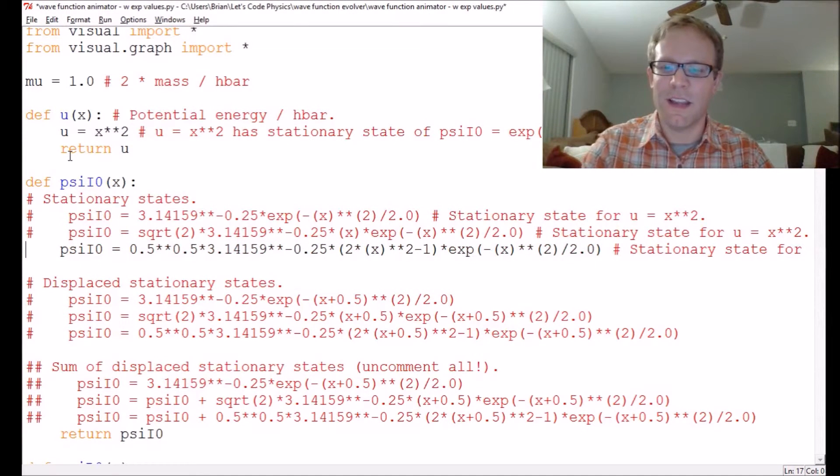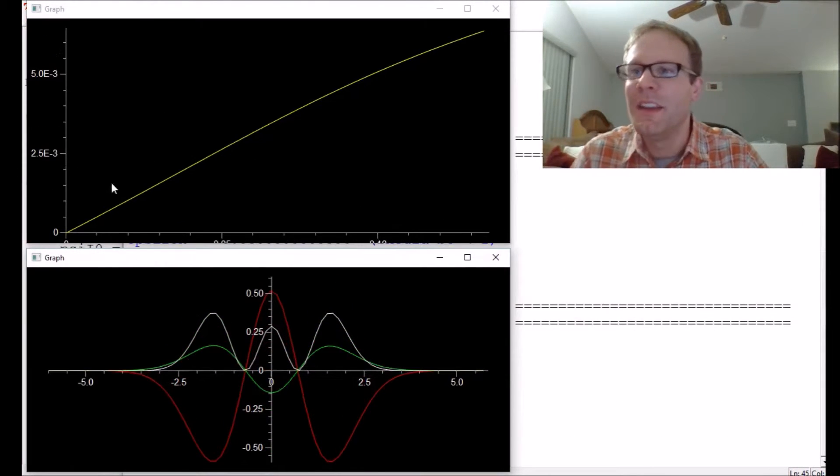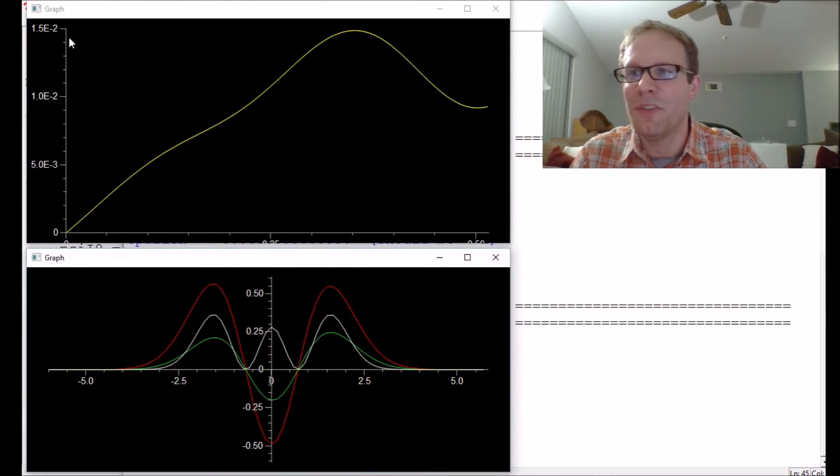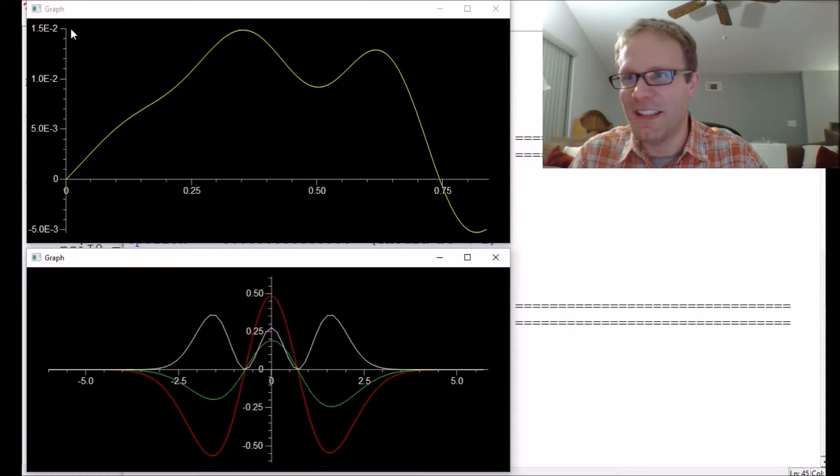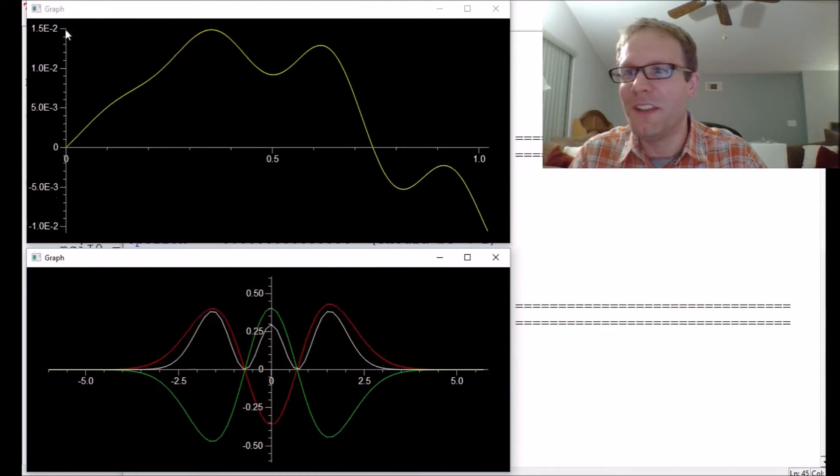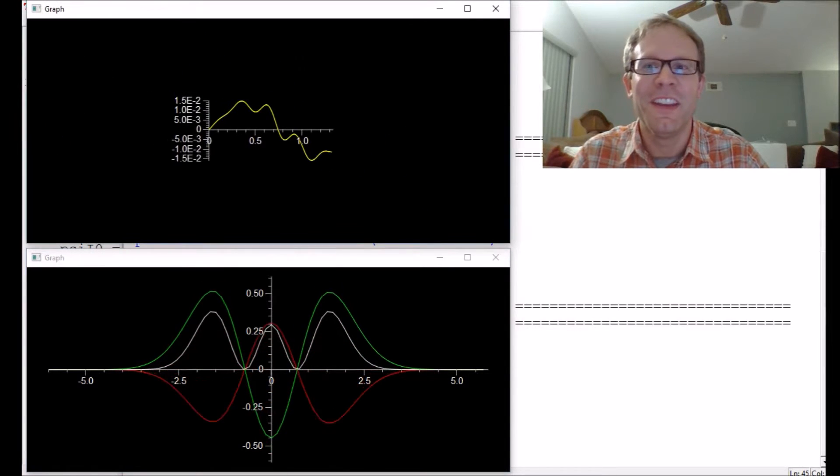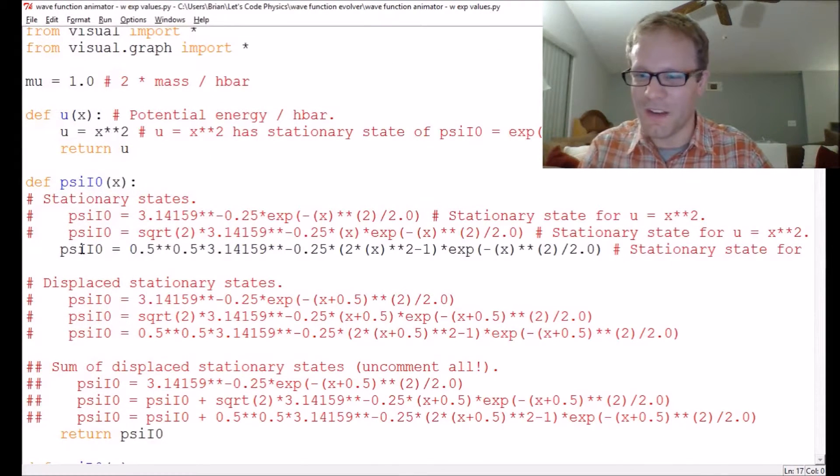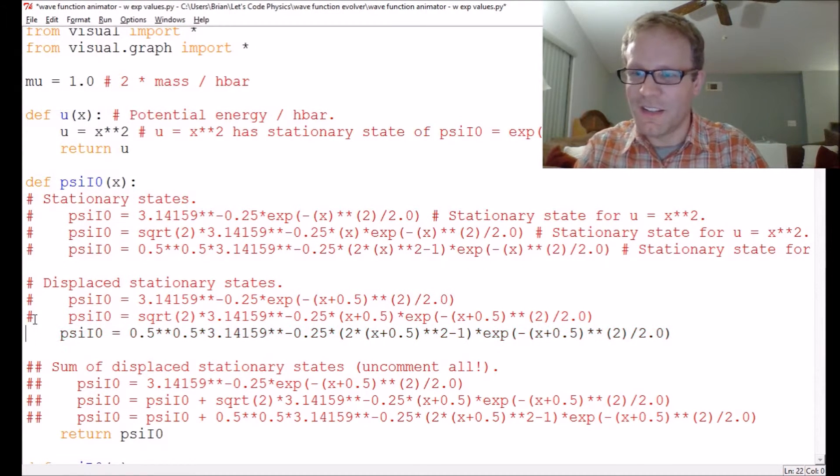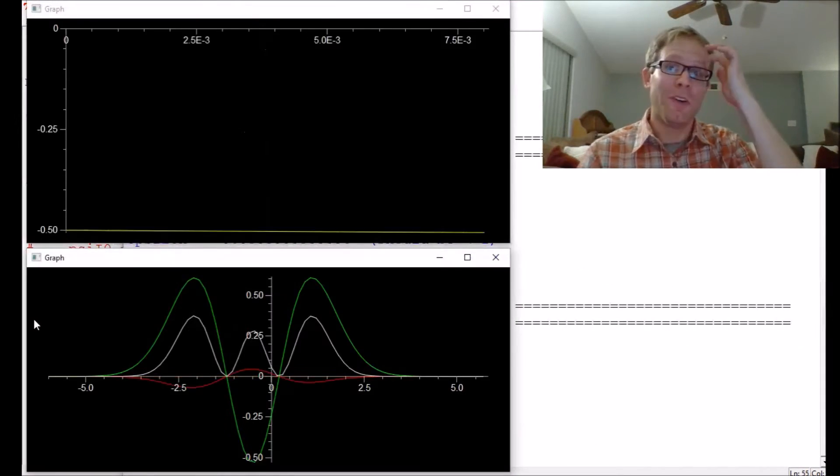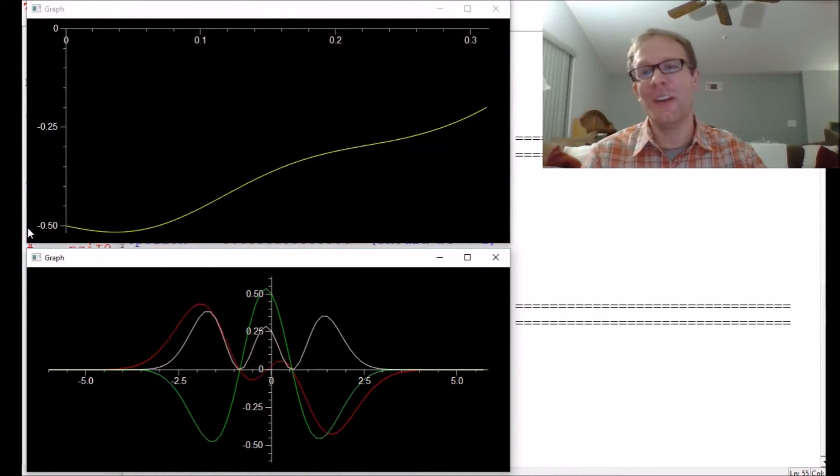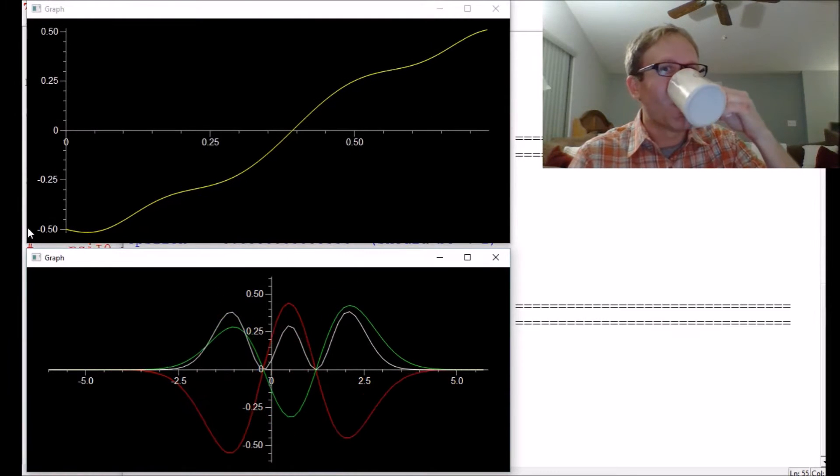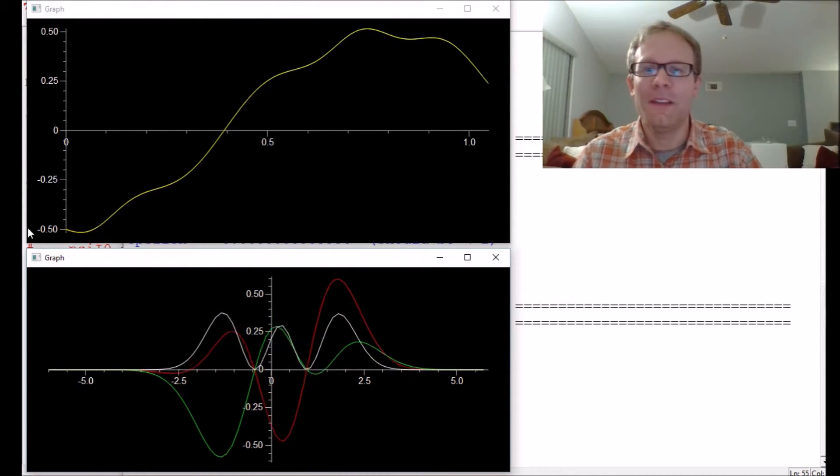That'll be true no matter what state we give it. If we give it the second excited state, as long as it's not displaced, this change in the wave function is not going to be very appreciable. This one is the second excited state and it's only at 1.5 times 10 to the minus 2. That's 0.015 compared to what we were getting before. The range we were getting before was about a half, so it's 0.15 out of a half, which is not very much.